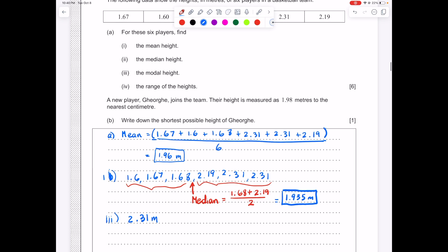And for 4, the range is going to be the maximum value, that's the highest value, minus the minimum value. Our maximum value we know is 2.31, that's the highest value. And the lowest number or minimum is 1.6. So when you subtract those numbers from each other, you get that the range is 0.71 meters.